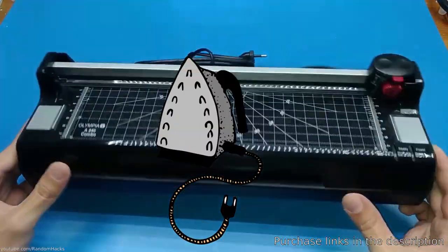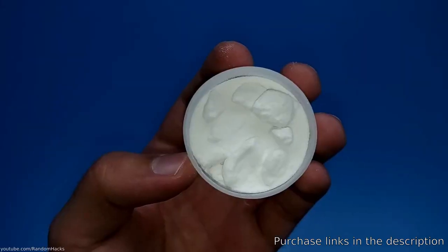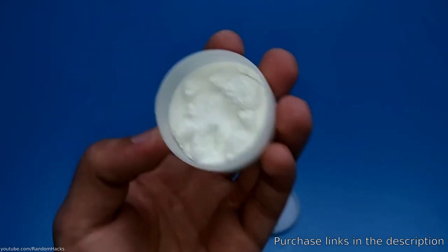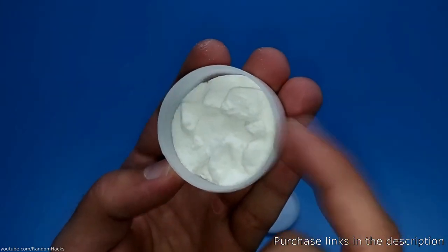A laminator or clothes iron to stick the dry film to the board, sodium carbonate, also known as soda ash, you can buy this as pH increaser for pools at most hardware stores.